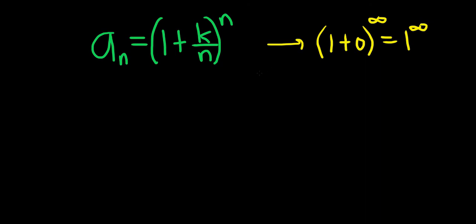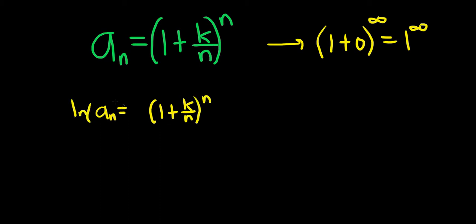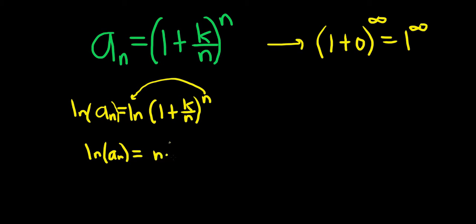To handle this we're going to use logarithms, and here's how it works. We'll start by writing it again: a sub n equals 1 plus k over n to the n. Then we'll take the log on both sides — ln of both sides — and when you do that you can bring the n down, so you get the natural log of a sub n equal to n times the natural log of 1 plus k over n.